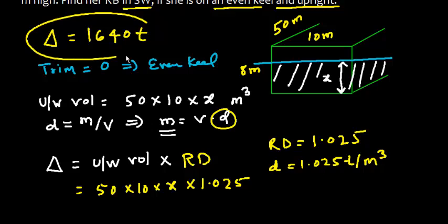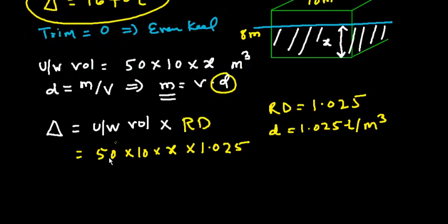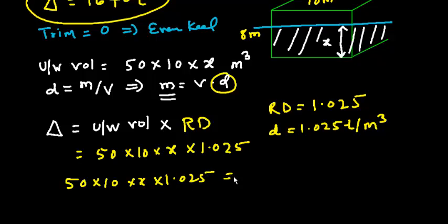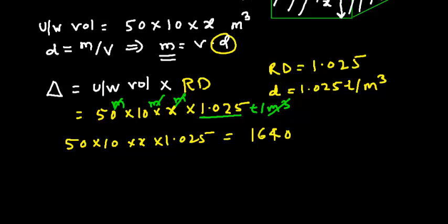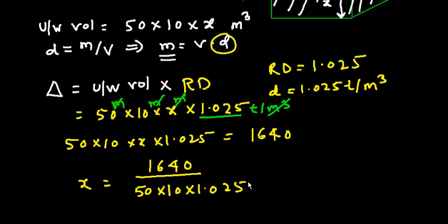This displacement equals the displacement given in the question. So we equate: 50 × 10 × x × 1.025 = 1640. The units work out — meters cubed times tons per cubic meter gives tons. So we solve for x: x = 1640 ÷ (50 × 10 × 1.025).